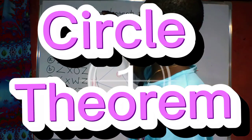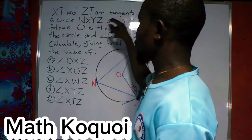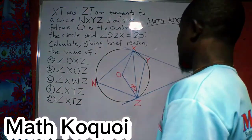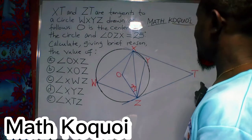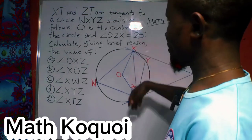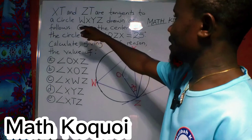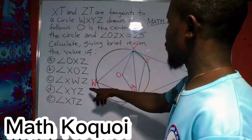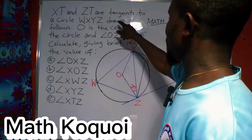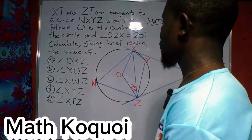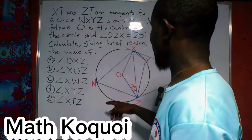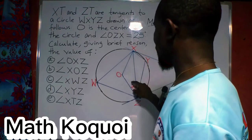XT and ZT are tangents to a circle. This is XT, there is T here, and we have ZT — both are tangents. The circle is WXYZ. O is the center of the circle, and angle OZX is 25 degrees.